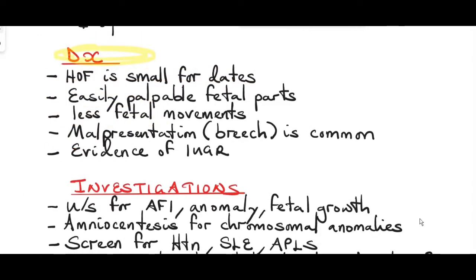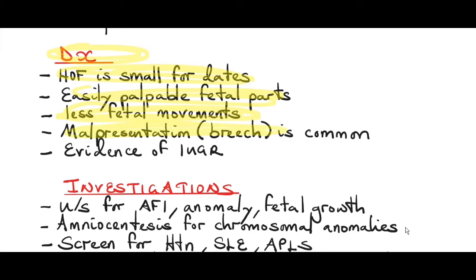To diagnose oligohydramnios, when you examine the patient, you find the fundal height is smaller than the expected gestational age, and the fetus is easily palpable because there is less amniotic fluid. There will be reduced fetal movements — with less amniotic fluid it's like swimming in an empty pool. The most common malpresentation is breech, as it's difficult for the fetus to turn to cephalic presentation with less fluid. There may also be evidence of intrauterine growth retardation.